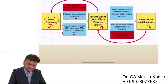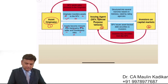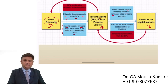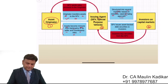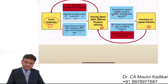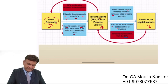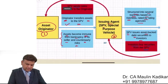The issuing agent, the special purpose vehicle, structures the assets into several tranches based on riskiness, rated by the rating agencies. The special purpose vehicle then issues asset-backed debt securities to investors in the capital market, which include specific interests and services.